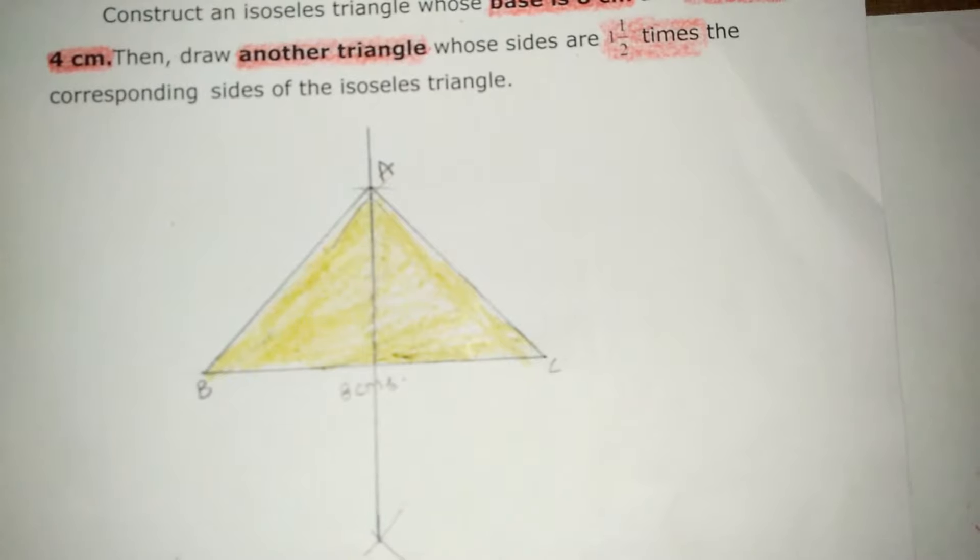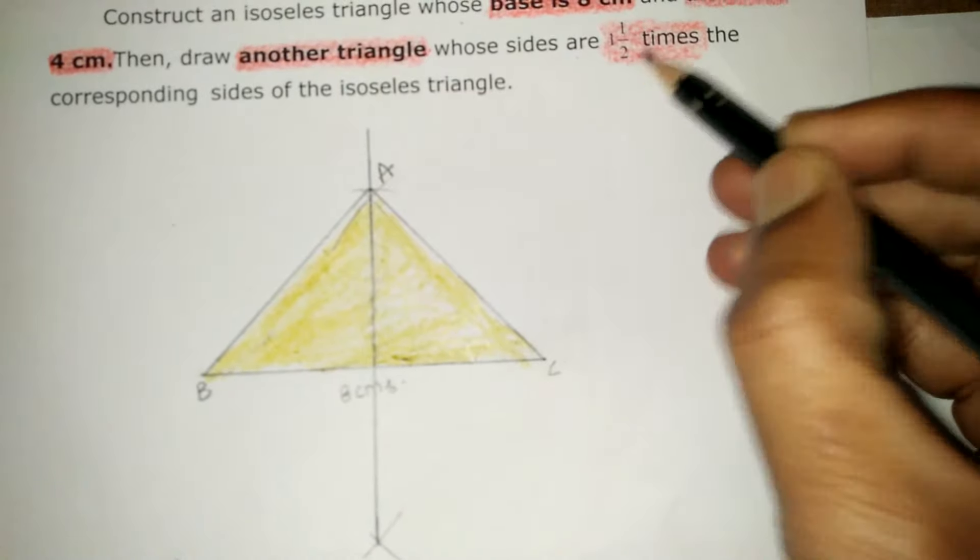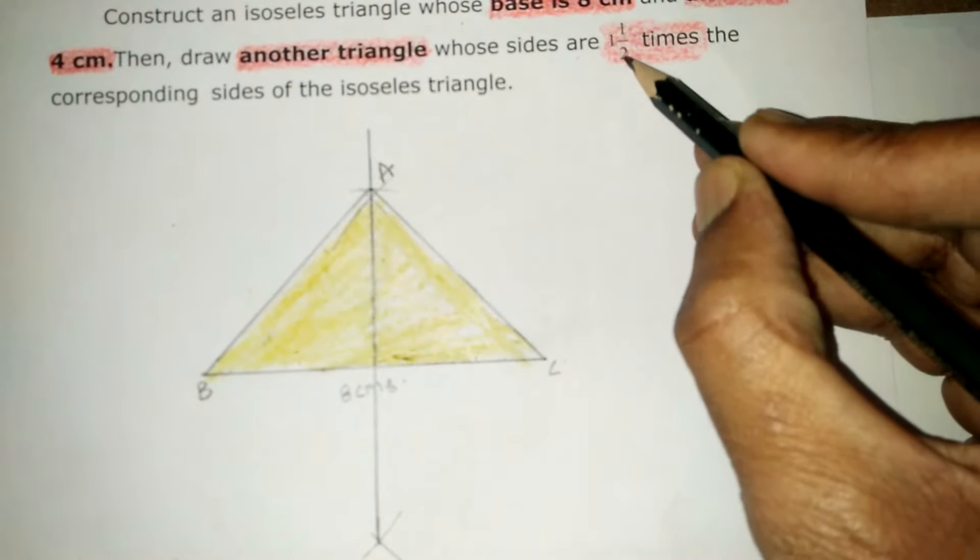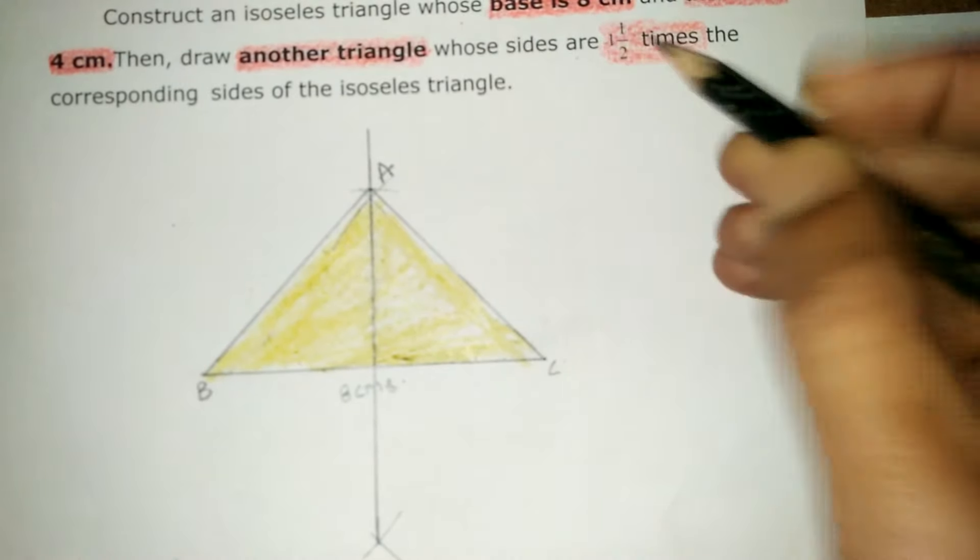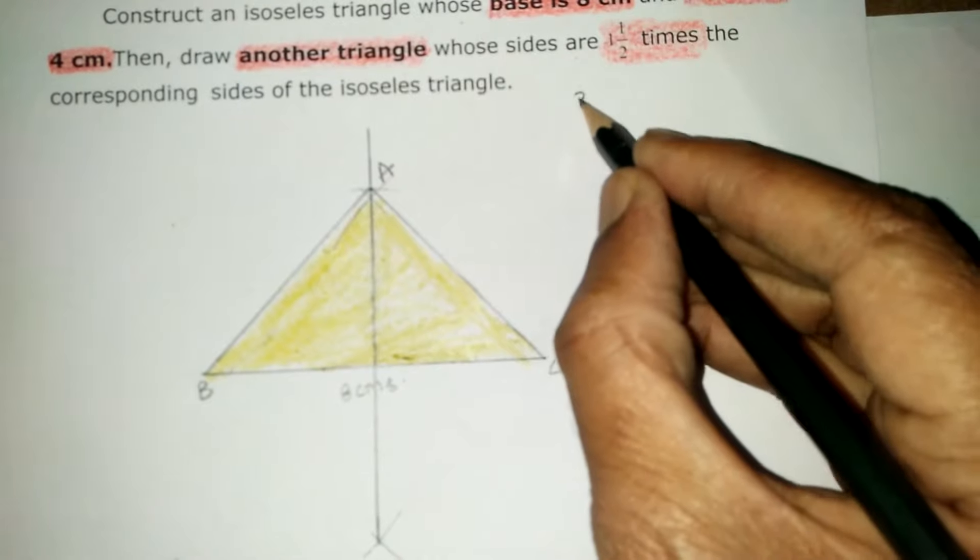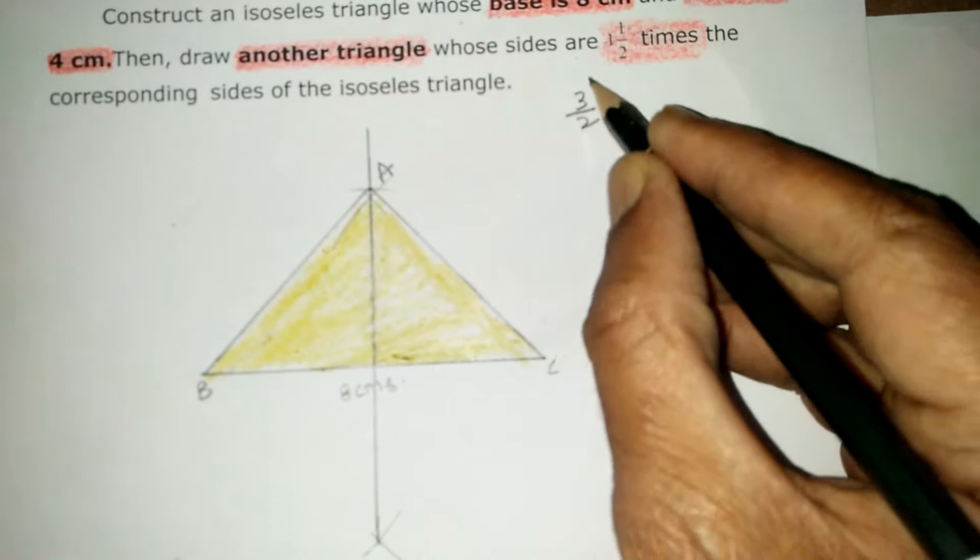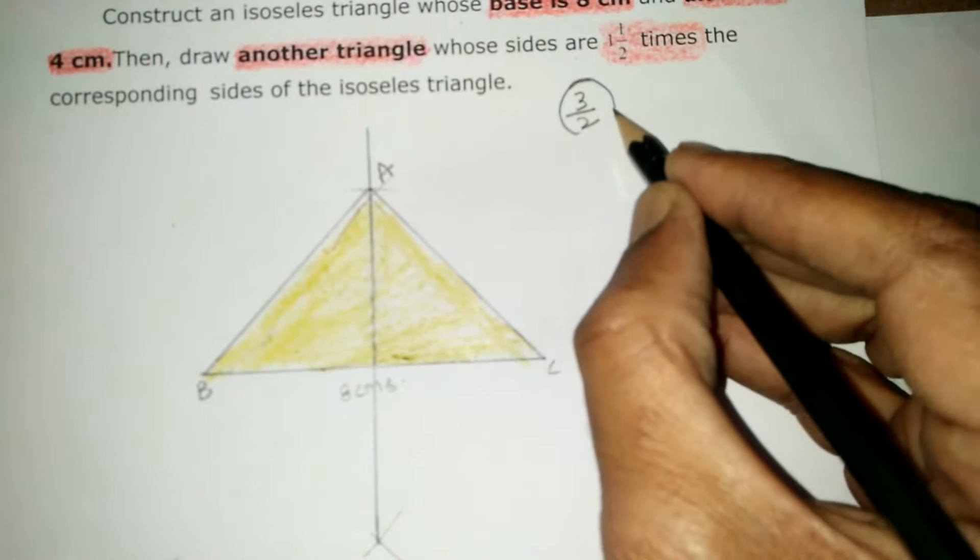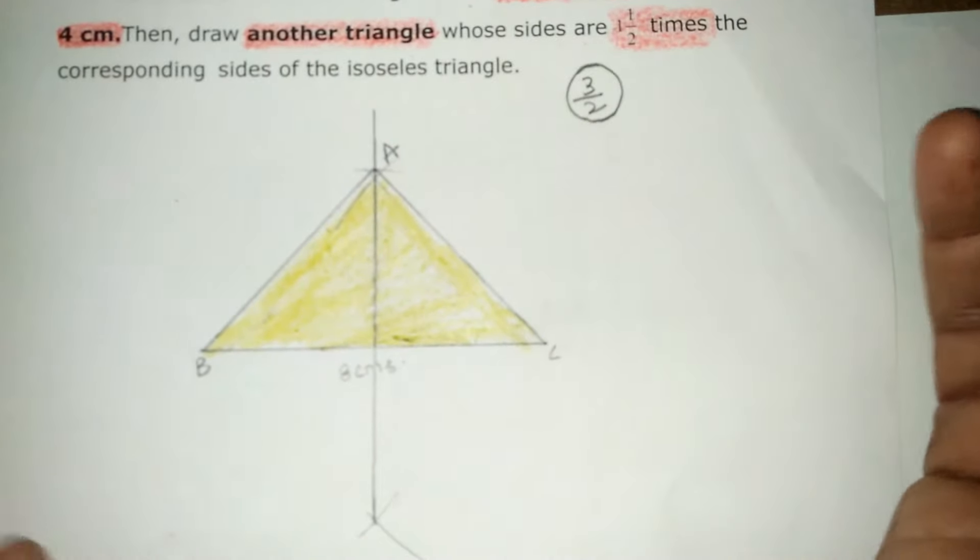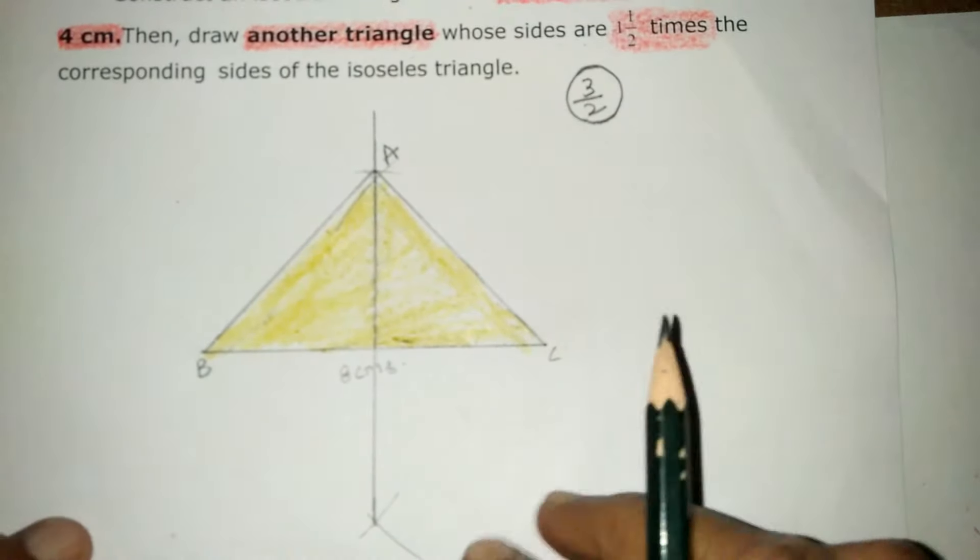Now, here it is given 1 and a half times. That is 2 plus 1, which is 3 by 2. The scale factor is 3 by 2. Hence, it is more than 1.